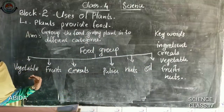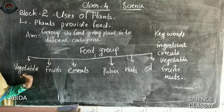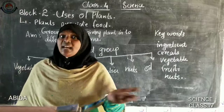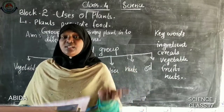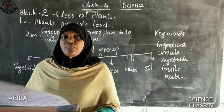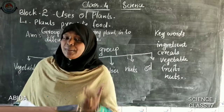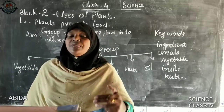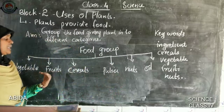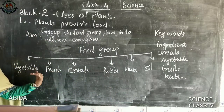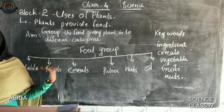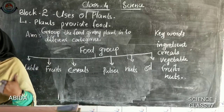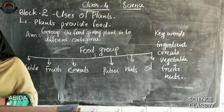First one is vegetables. When we write the ingredients of biryani, we write onion and tomato — these are vegetables. Then fruit — give me an example of fruit. Mango, apple, banana, grapes, etc. So many fruits we know.